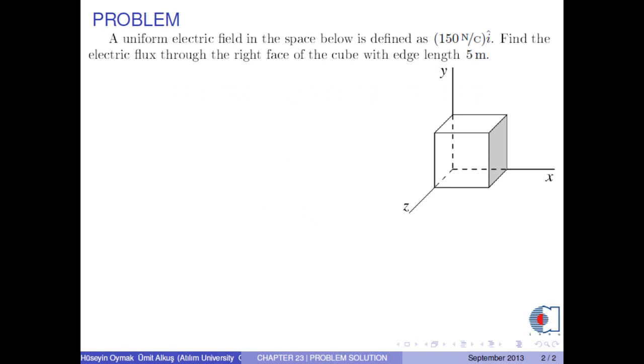A uniform electric field in the space below is defined as 150 N per C i-hat. Find the electric flux through the right face of the cube with edge length 5 meters.